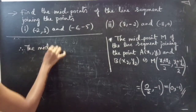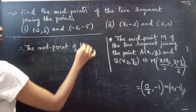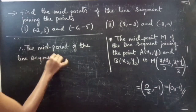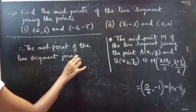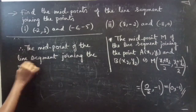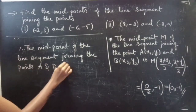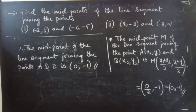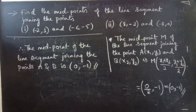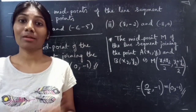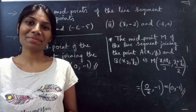Therefore, the midpoint of the line segment joining the points A and B is 0 comma minus 1. This is how we find the midpoint of a line segment joining two points. We have seen some problems on midpoints from coordinate geometry in this video. Hope you understood — we will see you in the next video. Bye-bye.